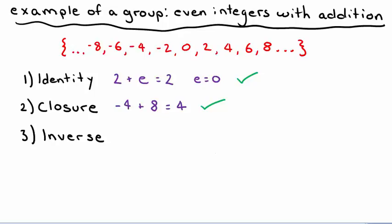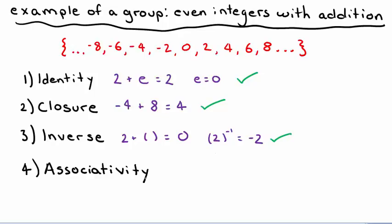Checking closure: choosing two random elements, say negative 4 and 8, their sum is 4, which is also in the group. This holds for any combination because the sum of any even integers is another even integer, so closure holds. For inverse, we want 2 plus its inverse to equal 0, giving us negative 2. All negative even integers exist in our group, so inverse holds. Addition is associative, so associativity holds. Because all four requirements hold, the even integers with addition is a group.